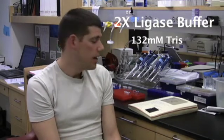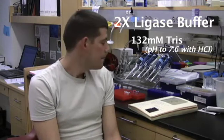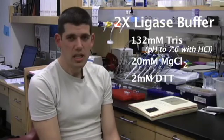For the buffer, I use 132 millimolar TRIS titrated with HCl to pH 7.6, then 20 millimolar magnesium chloride, and 2 millimolar DTT.